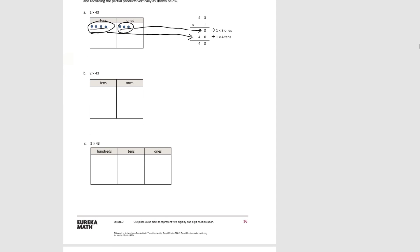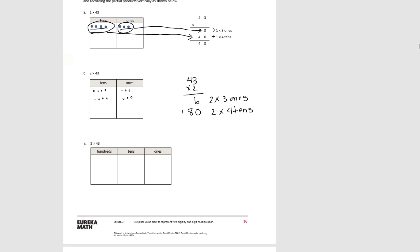Pause the video and try B. We're showing 43 — 4 tens and 3 ones — 2 times. When we write our problem vertically, we first look at the 1's: 3 ones 2 times gives us 6 ones, so 2 times 3 ones. In the tens column we have 4 × 2 = 8 tens, a total of 80, which is 2 times 4 tens. Adding them together we get 86 — 80 plus 6.